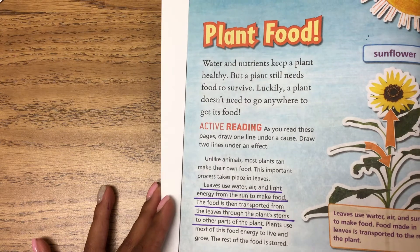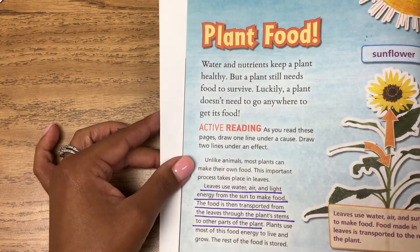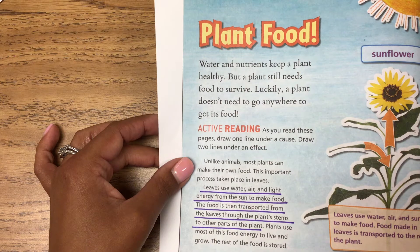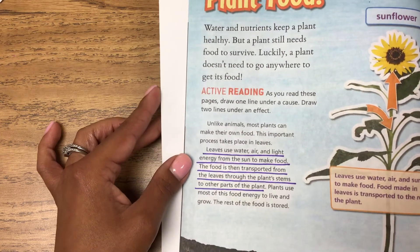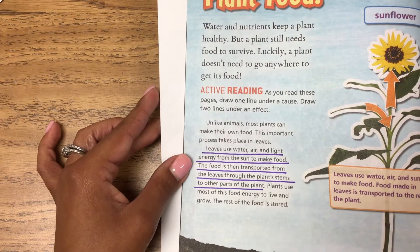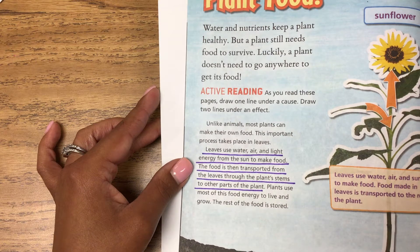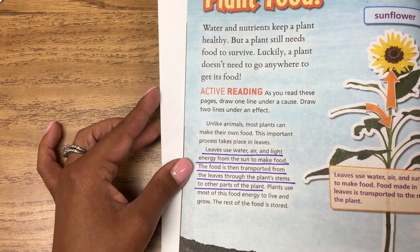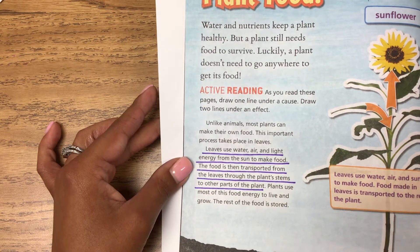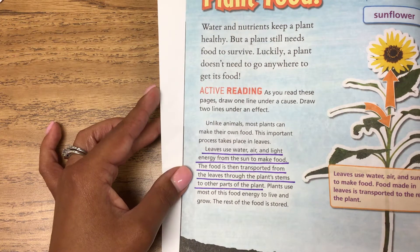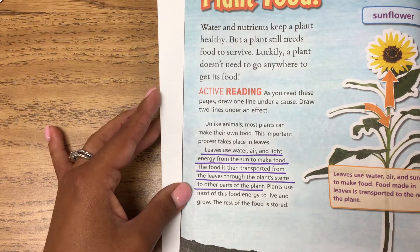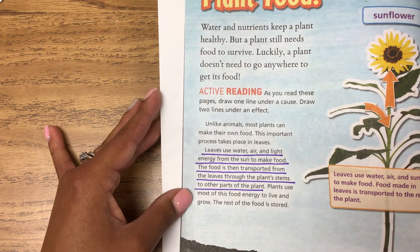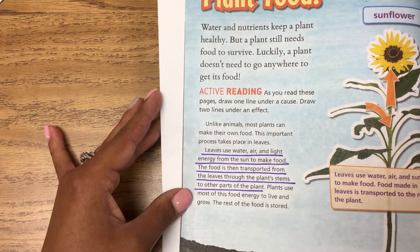Water and nutrients keep a plant healthy, but a plant still needs food to survive. Luckily, a plant doesn't need to go anywhere to get its food. Unlike animals, most plants can make their own food. This important process takes place in leaves. Leaves use water, air, and light energy from the sun to make food. The food is then transported from the leaves through the plant's stems to other parts of the plant. Plants use most of this food energy to live and grow, and the rest of the food is stored.